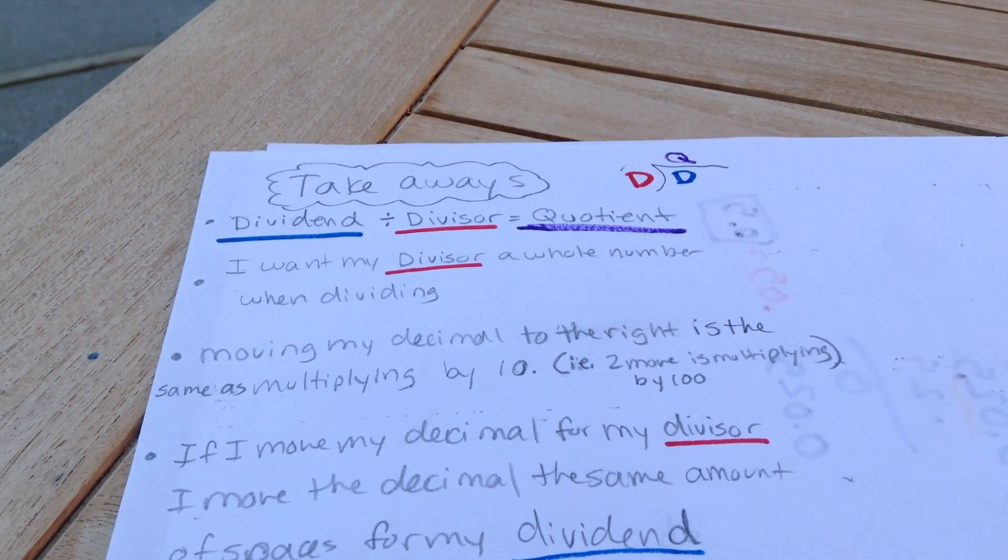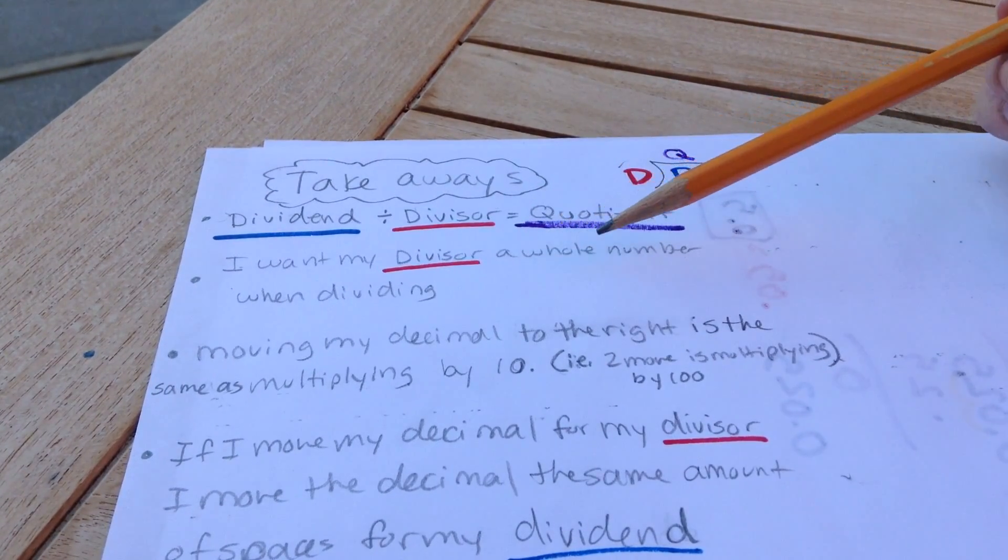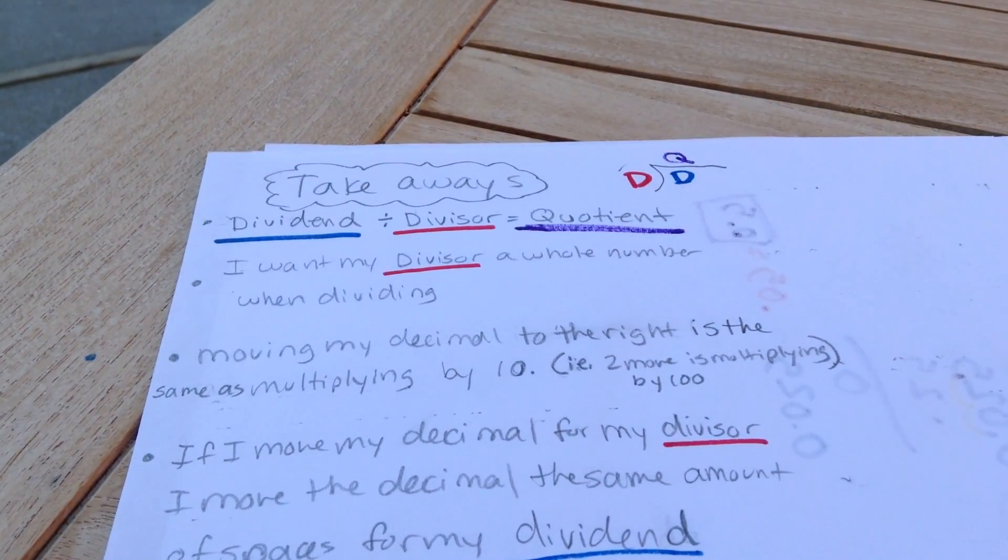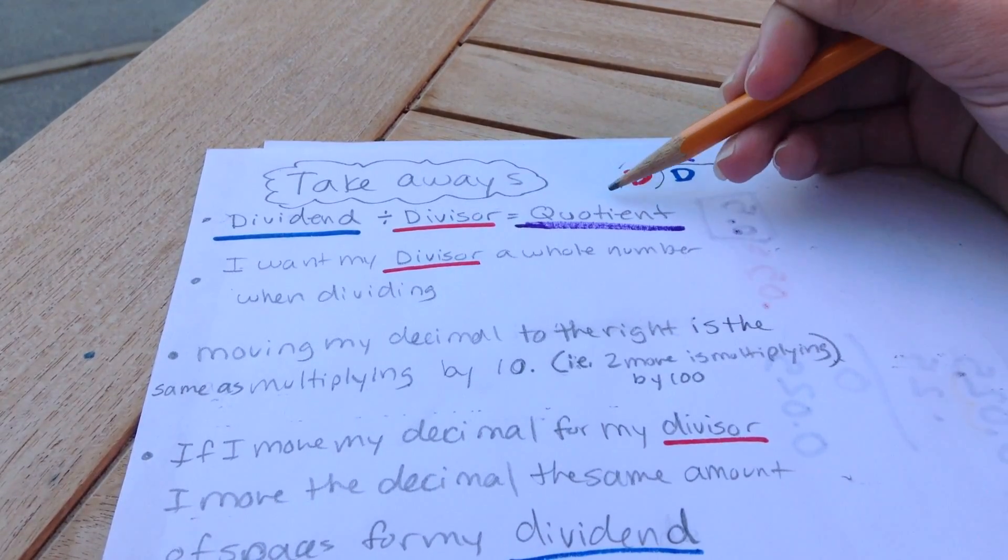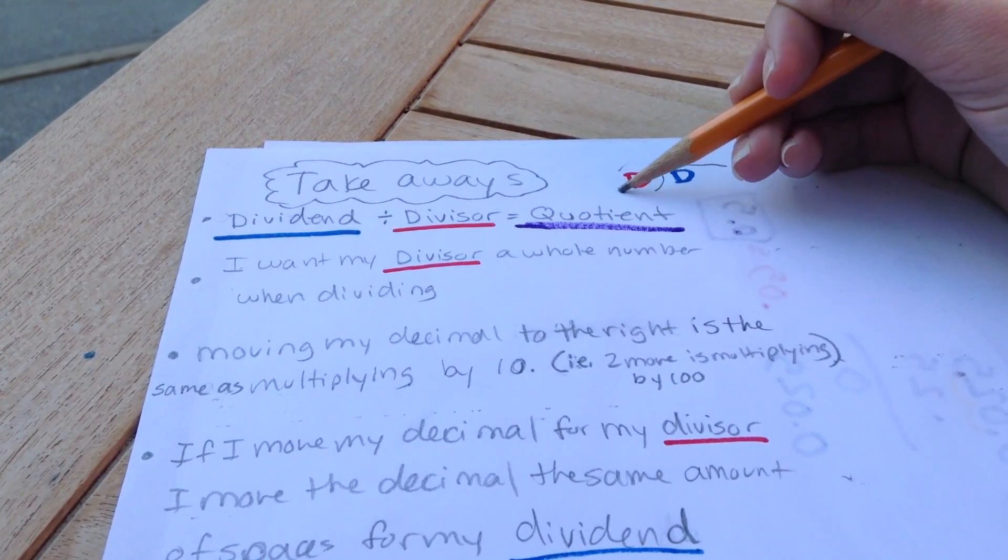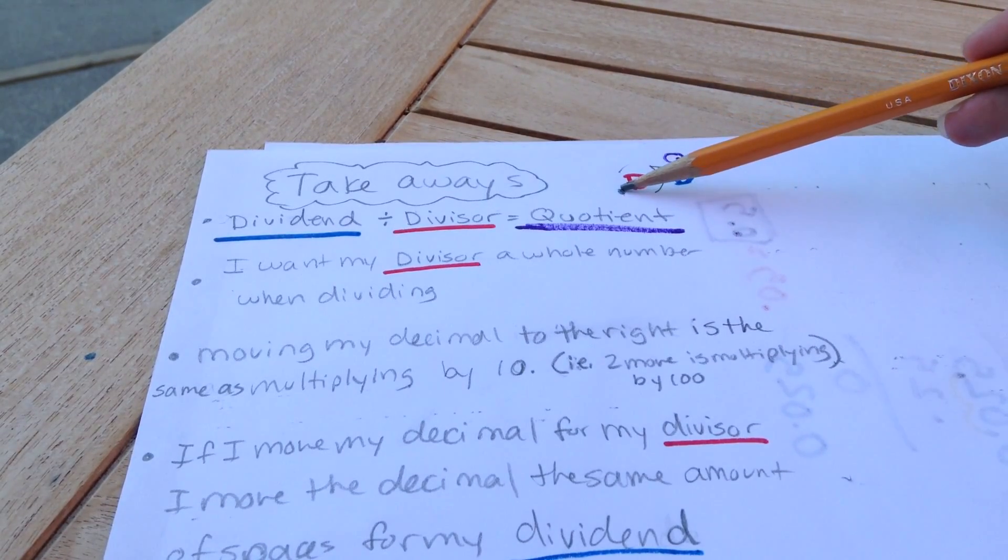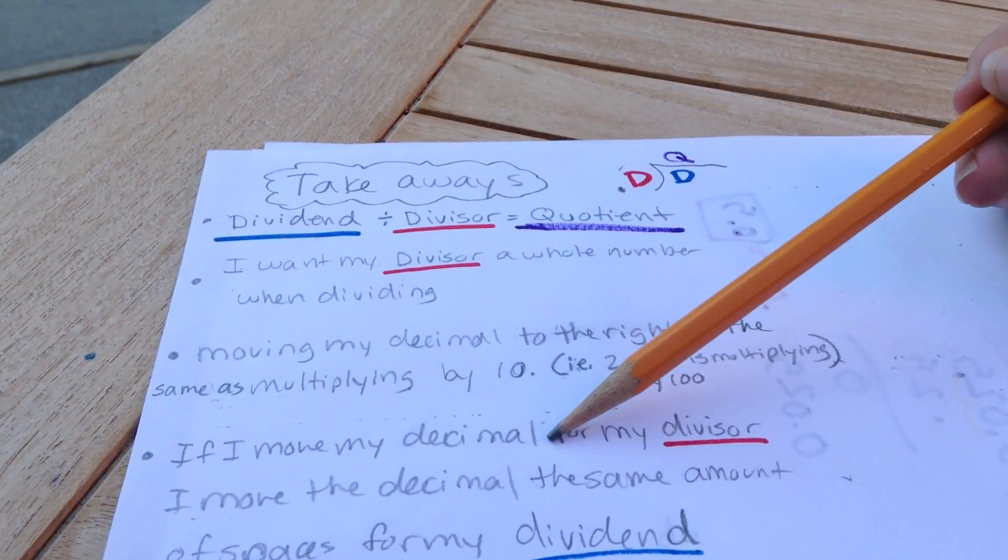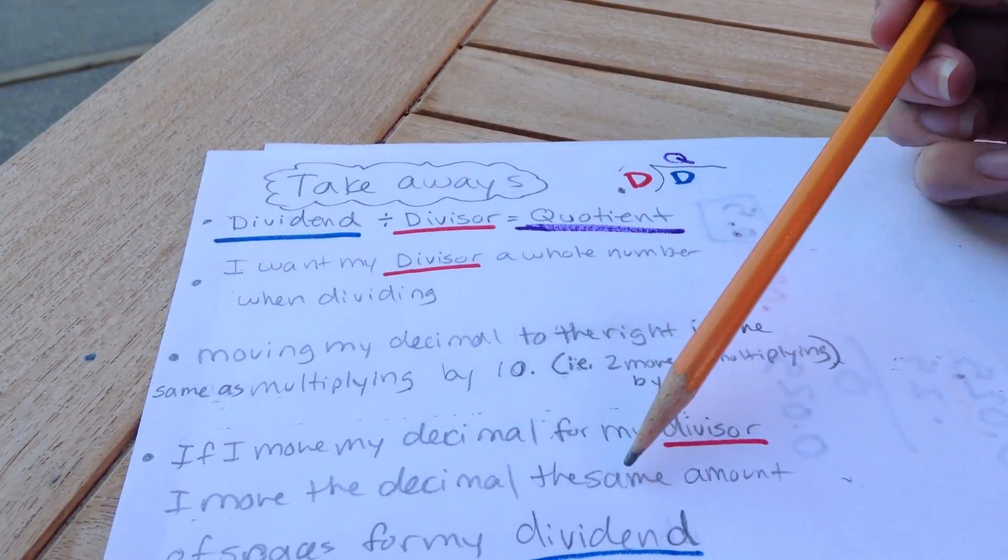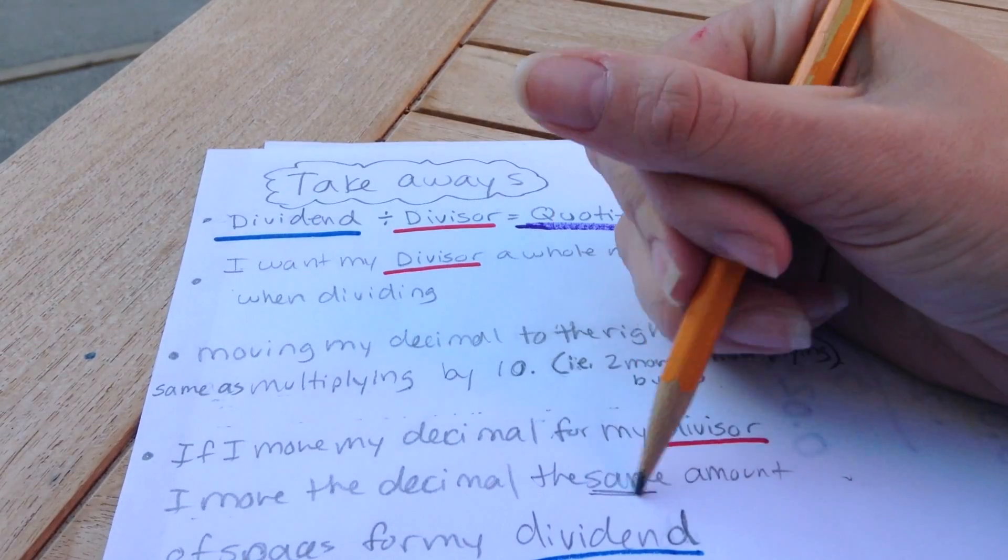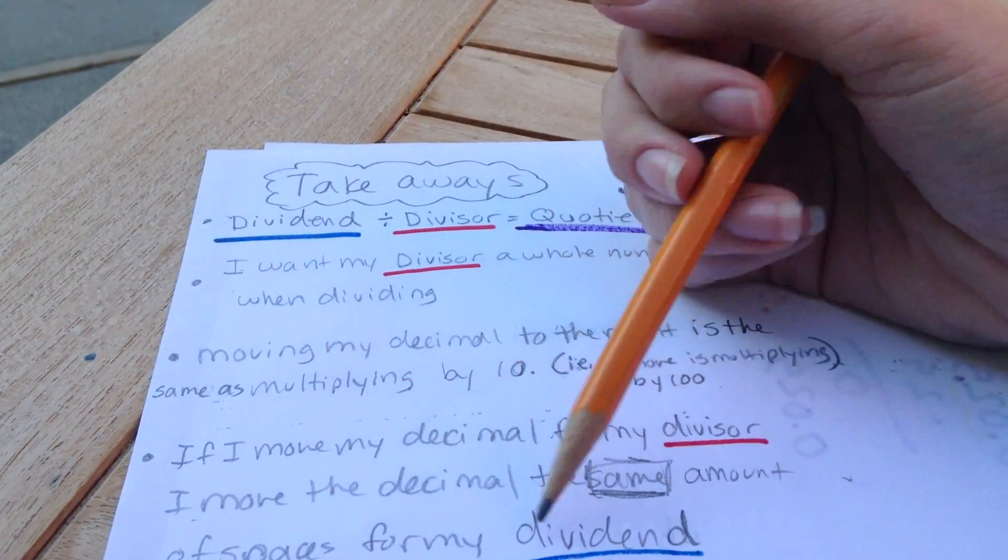My second takeaway for dividing decimals is that I want my divisor to be a whole number when dividing. So remember if I have a decimal over here for my divisor, I want to be able to try to make that into a whole number. So we learned a skill today of being able to move our decimal. So if our third takeaway was if I move my decimal for my divisor, I move the decimal the same amount, and the same is the very big key, the same amount of spaces for my dividend.